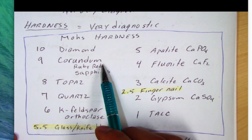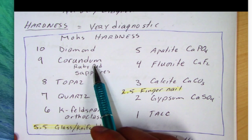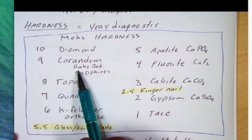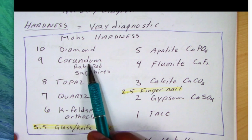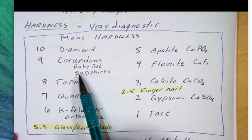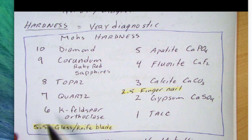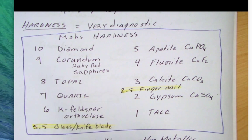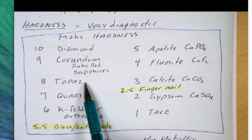At number nine is corundum. Both diamond and corundum are not commonly used as test minerals because they're usually precious gems — diamond obviously, and rubies are red corundum. Any other colors like green or blue would be sapphires, and they're all part of this corundum group. Then topaz is also a gem at number eight — a hard mineral, but not very common.